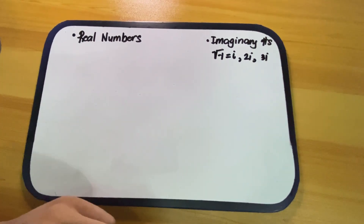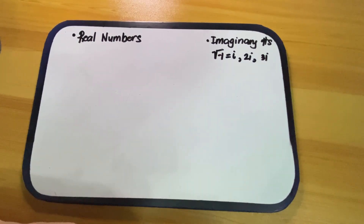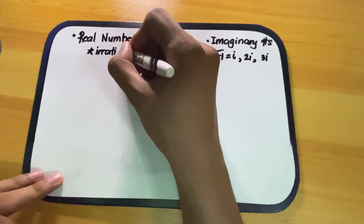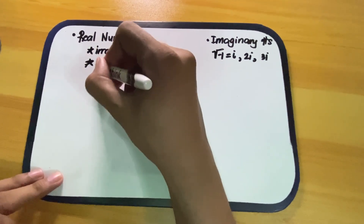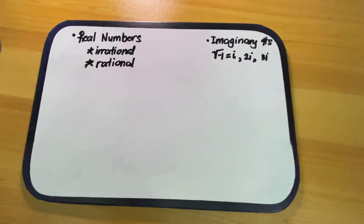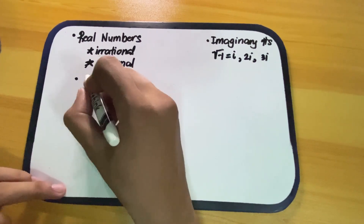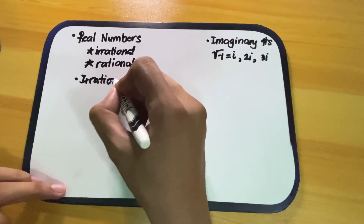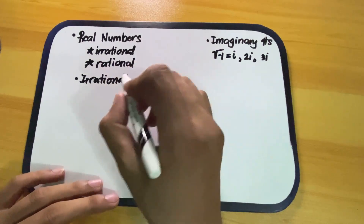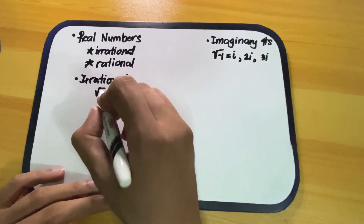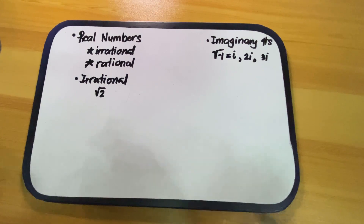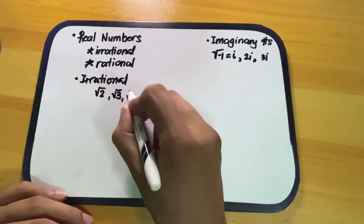Now we have real numbers. Real numbers are divided into two groups: irrational and rational. Irrational numbers are numbers which have repeating decimals. For example, square root of 2 — if you express this as a decimal, the result has repeating decimals. You can also write square root of 3 or square root of 5.